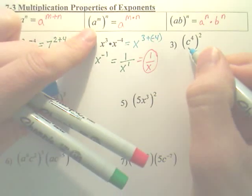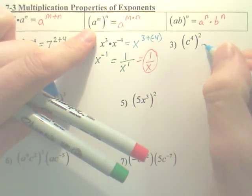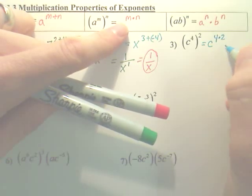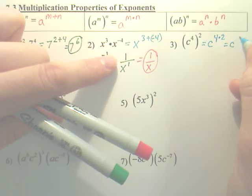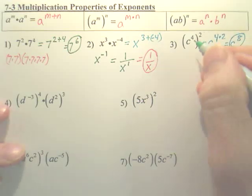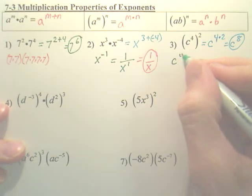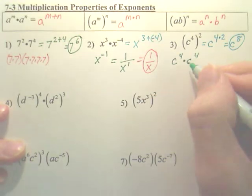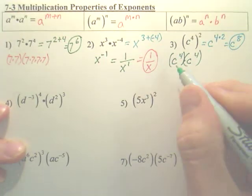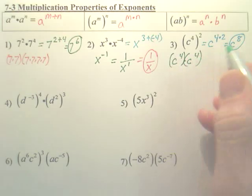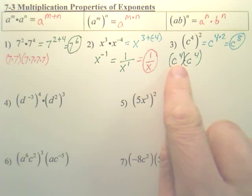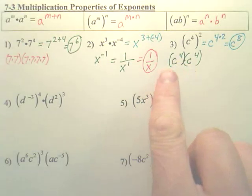Number three: this looks like the second property — you take something to a power to another power. According to the rule, it's simply c to the fourth times two, which is c to the eighth. Where does that come from? C to the fourth squared means c to the fourth times c to the fourth. Go back to the first property — add four plus four, that's eight. Or you could write c times c times c four times, and four more c's gives you eight c's total.